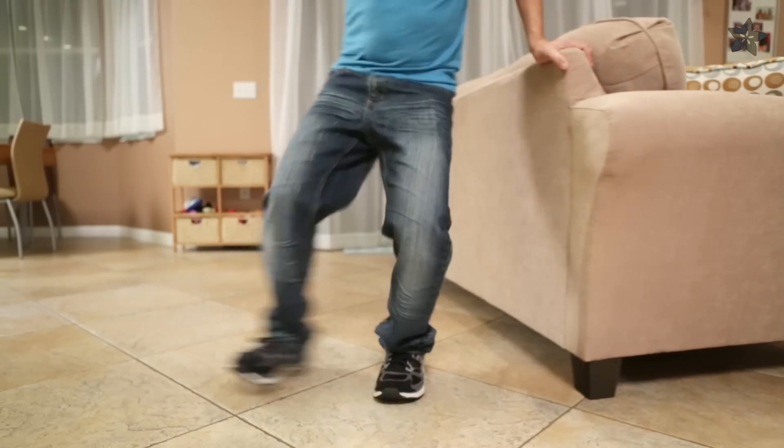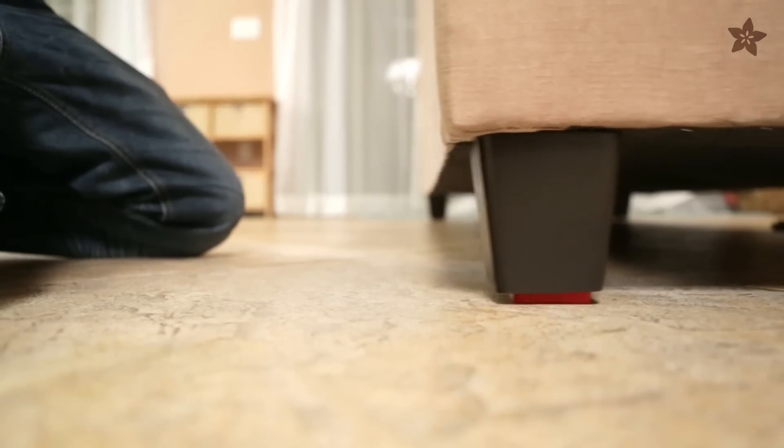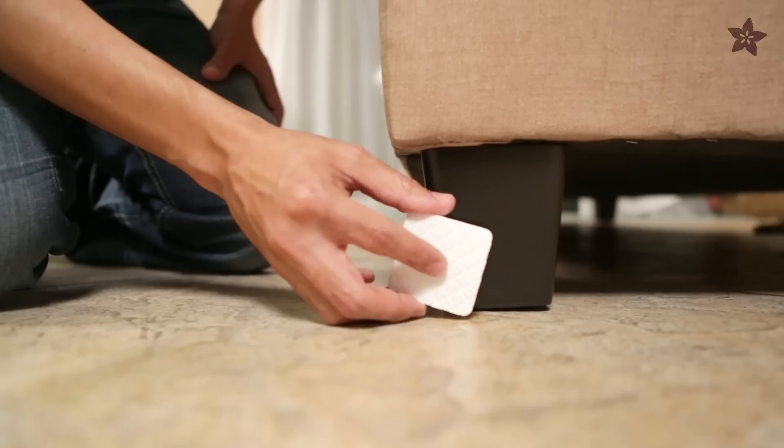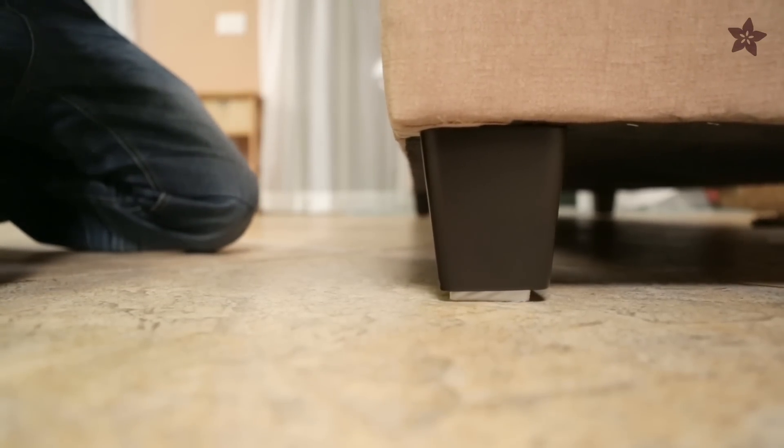Other practical uses include grips for keeping our couch from sliding all over the place. Semiflex has less friction, but great for cushioning. The original Ninjaflex has more friction and has really good gripping power.